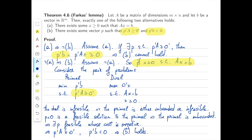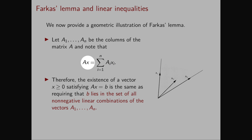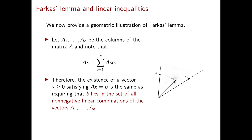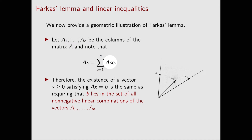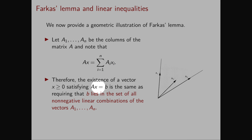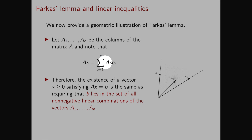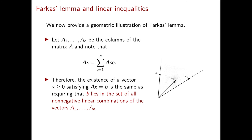And this concludes our proof of Farkas Lemma. Next I want to discuss the geometric intuition behind Farkas Lemma. We can write Ax as the sum of A_i x_i for i from 1 to n, where A_i denote the columns of A. The existence of a vector x ≥ 0 satisfying Ax = b means that the vector b lies in the set of all non-negative linear combinations of the vectors A_1 through A_n.